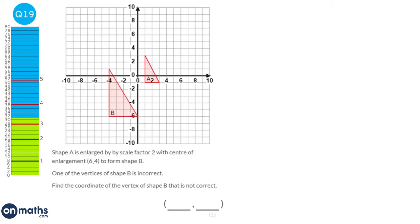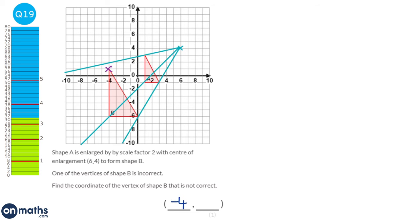The centre of enlargement is at (6, 4). Drawing ray lines from the centre through each corner of shape A, we check whether they pass through the corners of shape B. Two corners check out, but one does not. The coordinate of the incorrect vertex of shape B is (−4, 1).